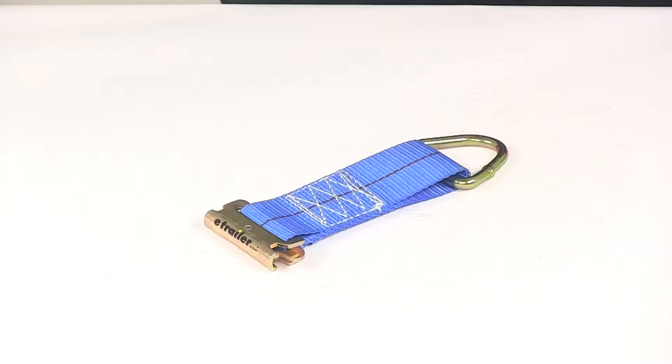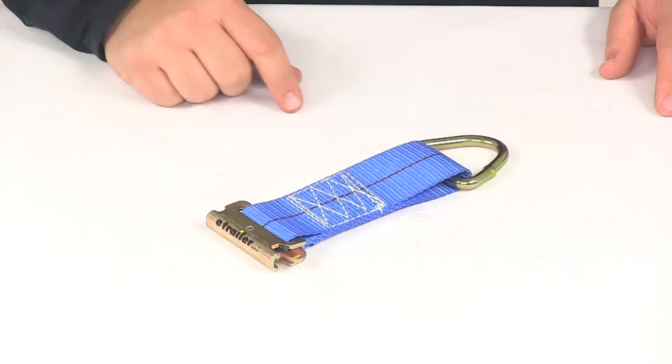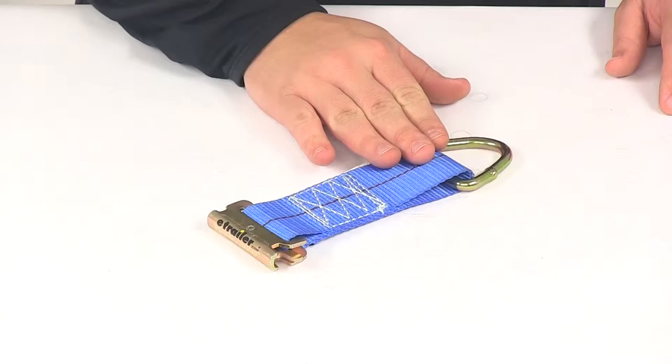Today we're going to be taking a look at the Ericsson E-Track tie-off with D-ring. One end connects into your E-Track system. The other end has a D-ring for easy connecting and cargo management. The tie-off with D-ring provides an easy and practical way to attach a strap to help secure your load.